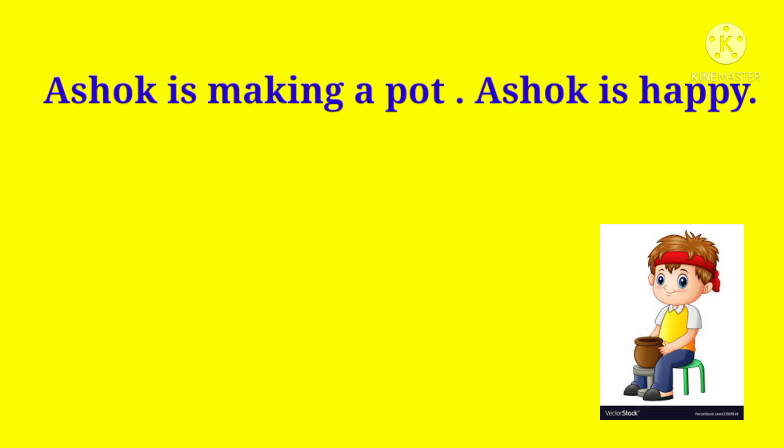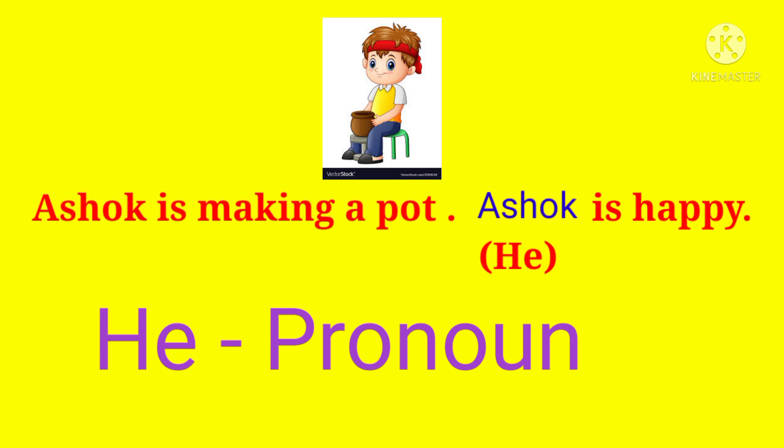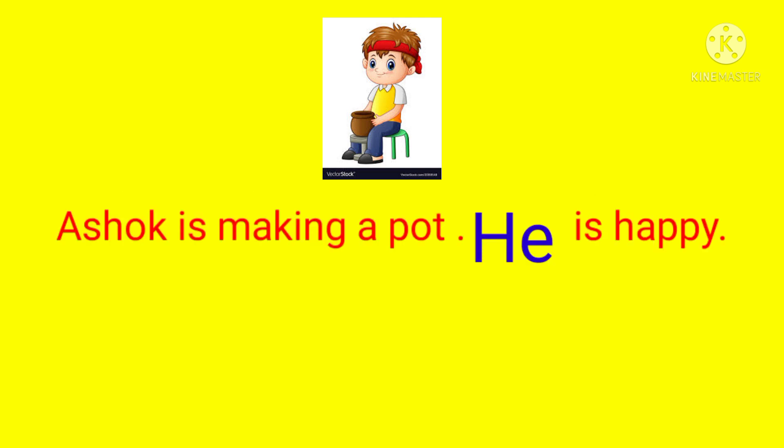Children, look at the second sentence. In the second sentence, the name Ashok is repeated again. Ashok is making a card. Ashok is happy. So in the second sentence, in place of Ashok, we can also use the word 'he'. Ashok is a noun, so instead of Ashok, we can also use the word 'he'. So, the word 'he' is a pronoun. Now let's read the same sentences once again using a pronoun: Ashok is making a card. He is happy.